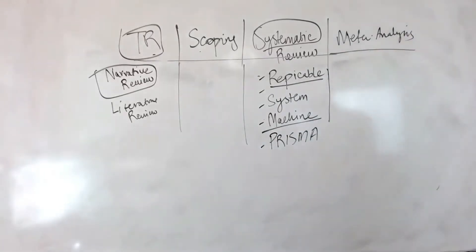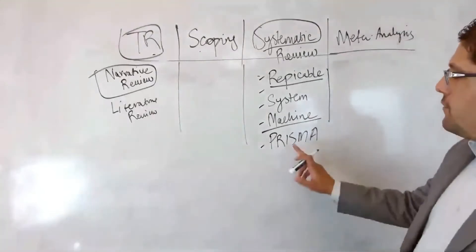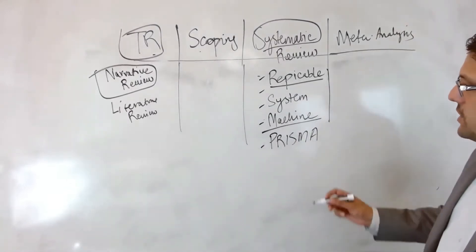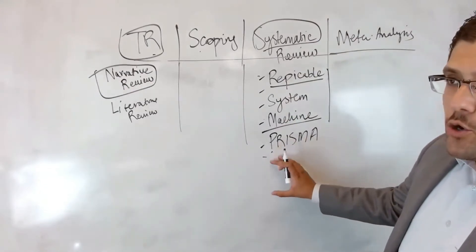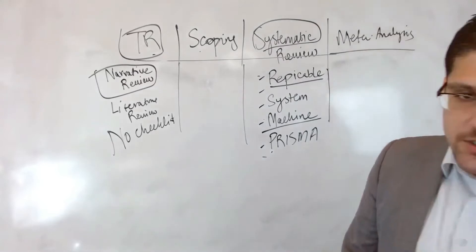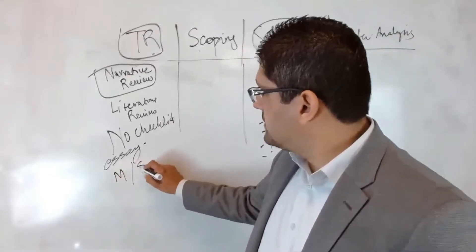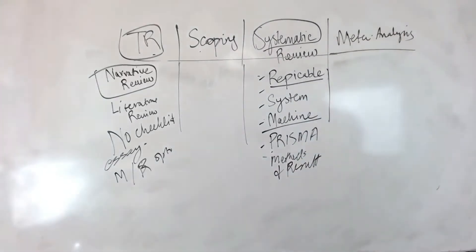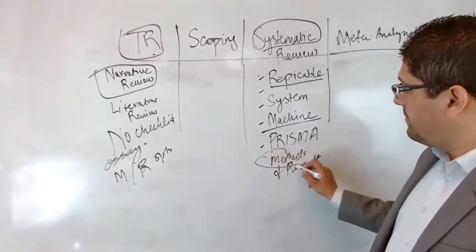You follow the PRISMA checklist. PRISMA stands for Preferred Reporting Items for Systematic reviews and Meta-Analysis. Once you follow the PRISMA checklist points, your paper will automatically become a system. In a traditional review, no checklist is needed because you are not creating a system — you are just writing a paper like an essay. Method and results sections are optional in a traditional review, but mandatory in a systematic review.